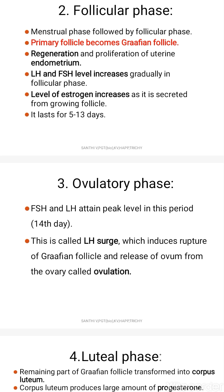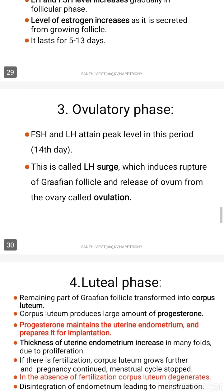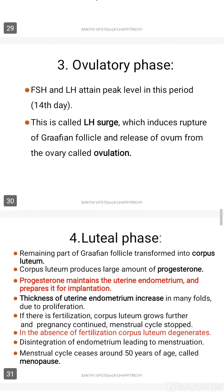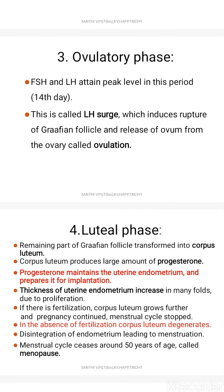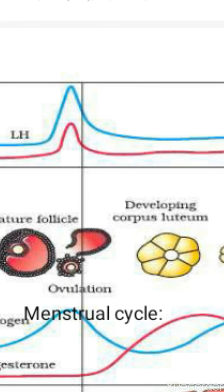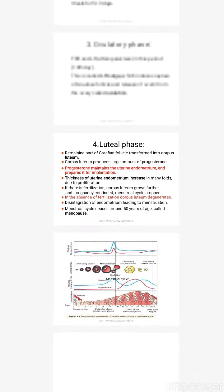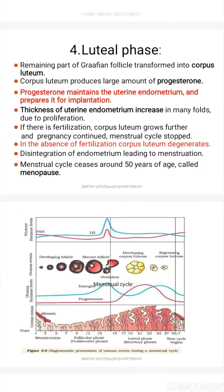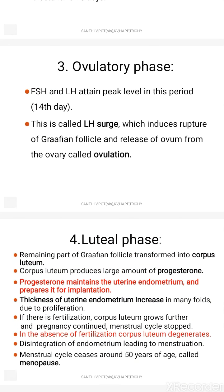All repair occurs during this time, and the level of estrogen also increases. It lasts for about 5 to 13 days. The third phase is called the ovulatory phase, because during this time ovulation occurs. Normally it occurs on the 14th day of the menstrual cycle.